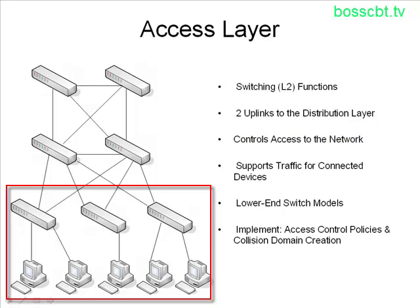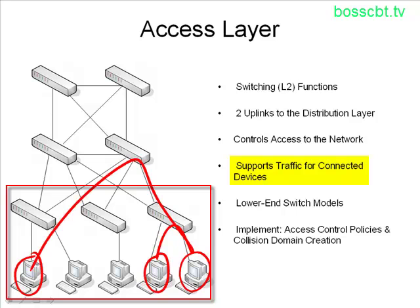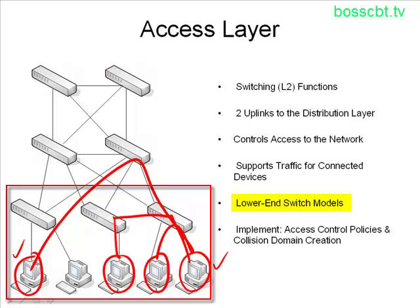The access layer also supports traffic for connected devices — if a PC wants to talk to another PC on the same access switch, it stays local. However, access layer switches are not transit switches: traffic does not go directly from one access layer switch to another to reach an end device; that functionality is located at the distribution layer. Generally speaking, access switches are lower-end switch models — they don't have the sophisticated functionality requirements of your distribution layer, so they're lower-model and usually less expensive. When implementing the access layer, keep in mind access control policies and that collision domains are created here.